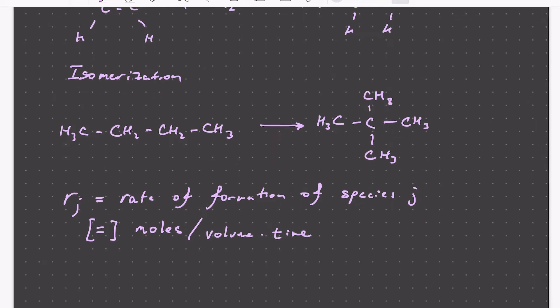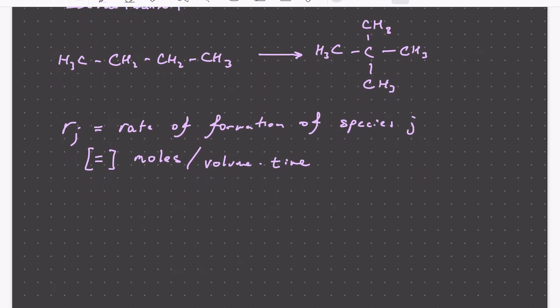So in terms of sign, R of J would be a positive value if we are generating J by reaction. This would be the case if J is a product of the reaction. And R of J is going to be a negative value, so J is going to be disappearing as the reaction proceeds. And this would be the case if J is a reactant.